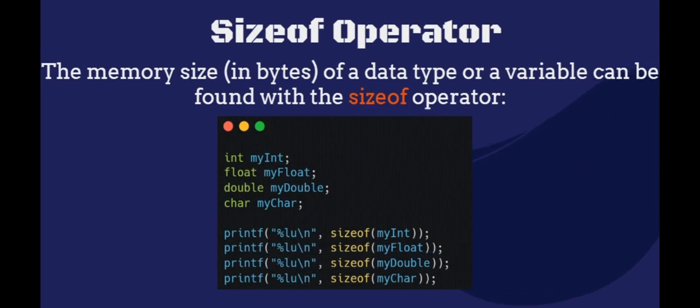Size of operator. The memory size, in bytes, of a data type or a variable can be found with the sizeof operator. Note that we use the %lu format specifier to print the result, instead of %d. It is because the compiler expects the sizeof operator to return a long unsigned int (%lu), instead of int (%d). On some computers it might work with %d, but it is safer to use %lu.